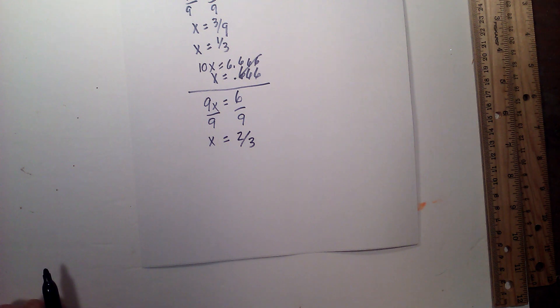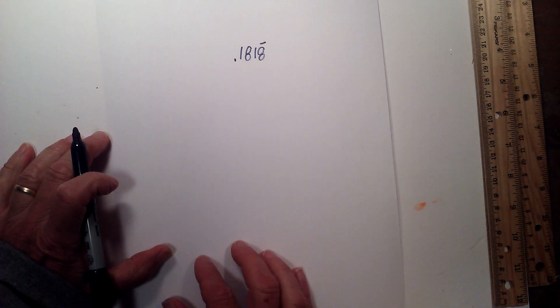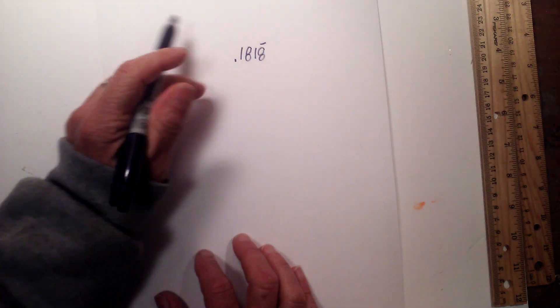So now what about if we get a number like this. Okay, what if it's a number 0.18 repeating—excuse me, 0.1818 repeating.